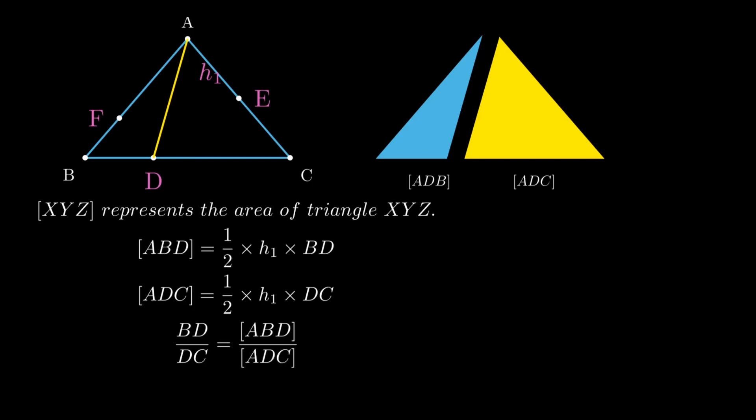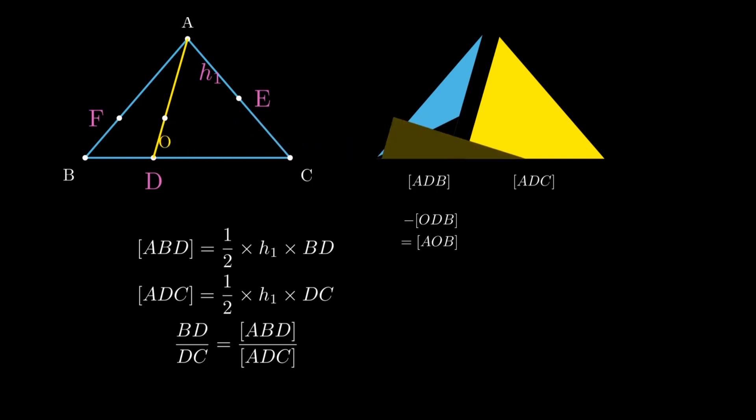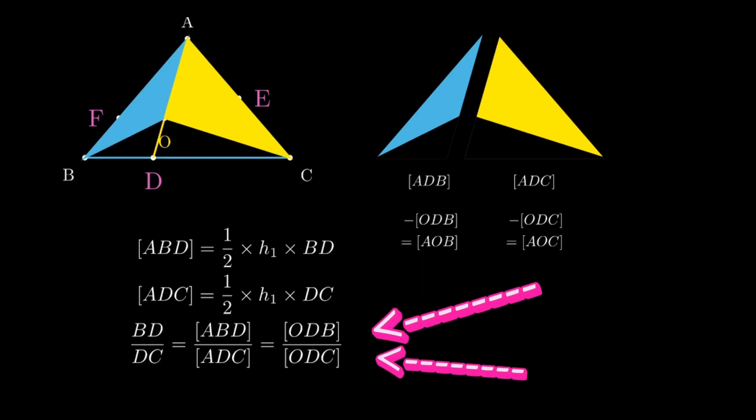Now we will cut off little proportions just like in the picture. That is BOD and COD. And we will be left out with the blue and the yellow portions. Since ODB and ODC still have the same height, their ratio will also be equal to BD over DC.